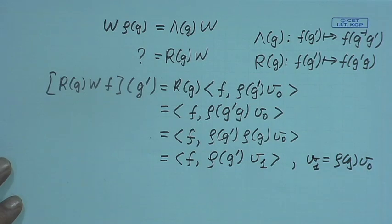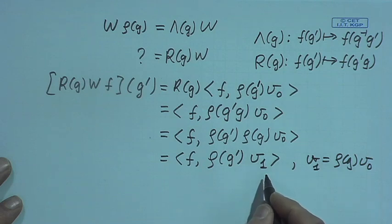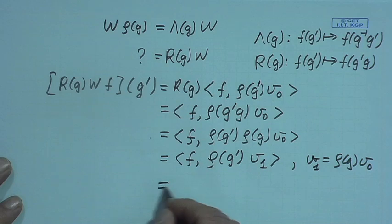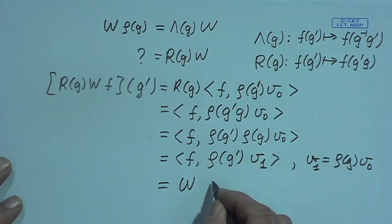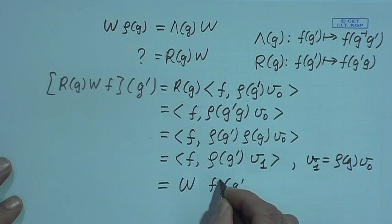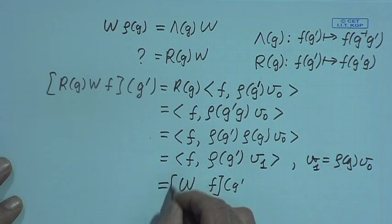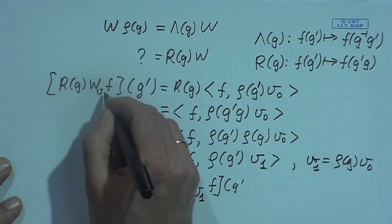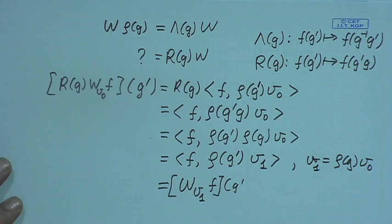So this is what we obtain. But what we have here is really a wavelet transform — this is just the formula for the wavelet transform, just with a different mother wavelet. So this is the wavelet transform of function F at point G', and we need to put V_1 here, specifying it was the wavelet transform with respect to V_0.